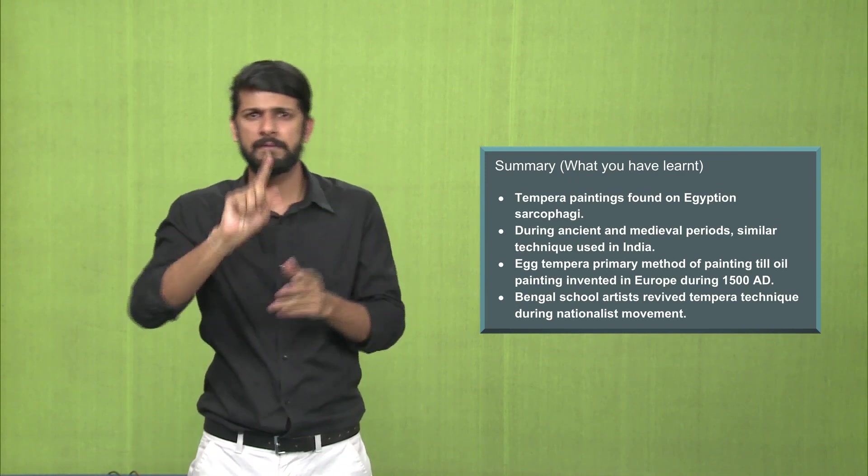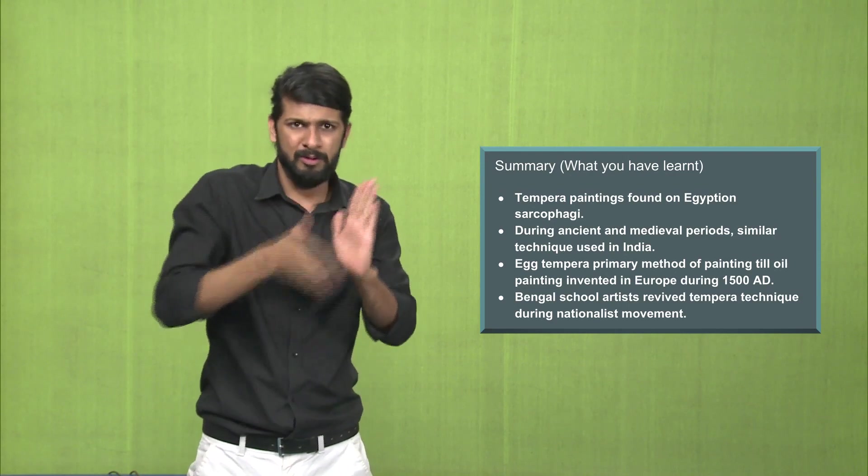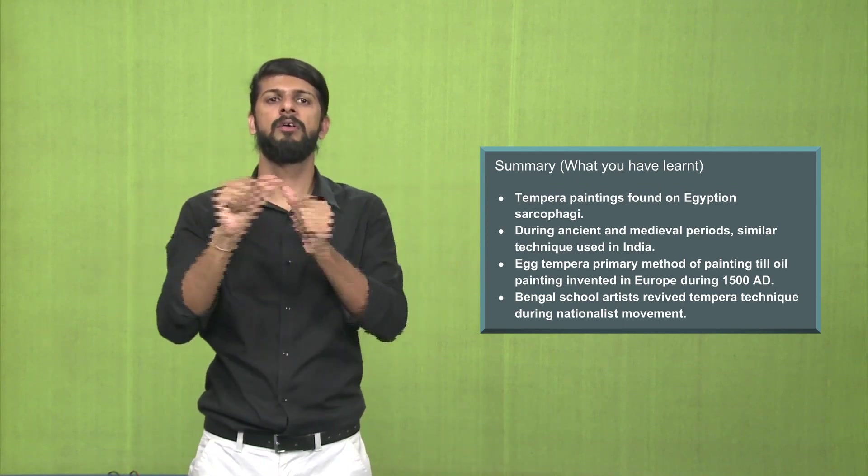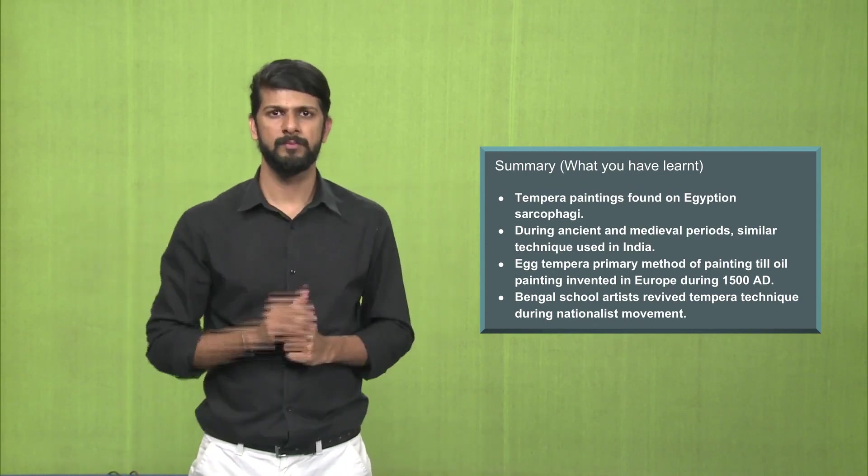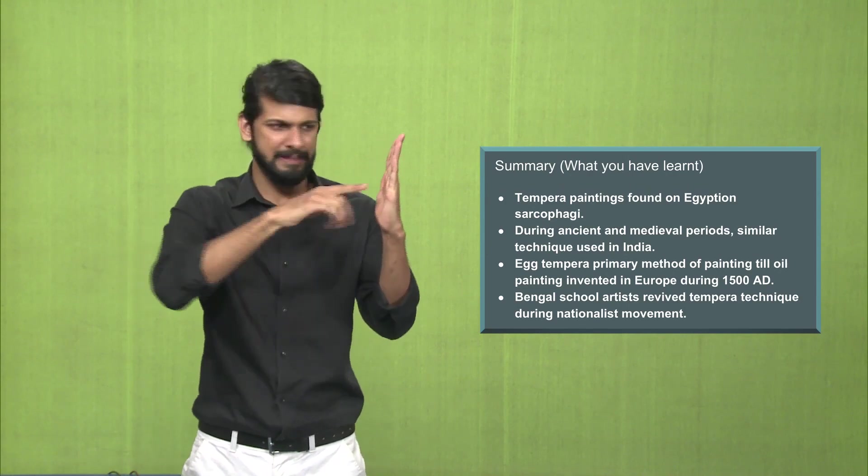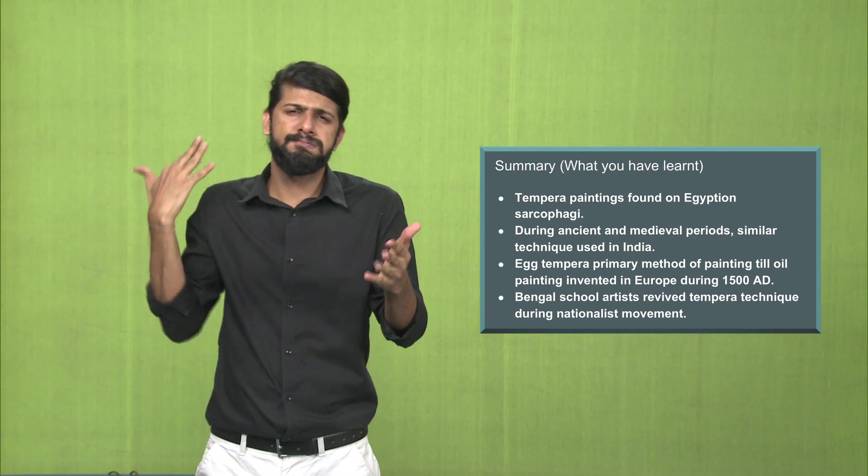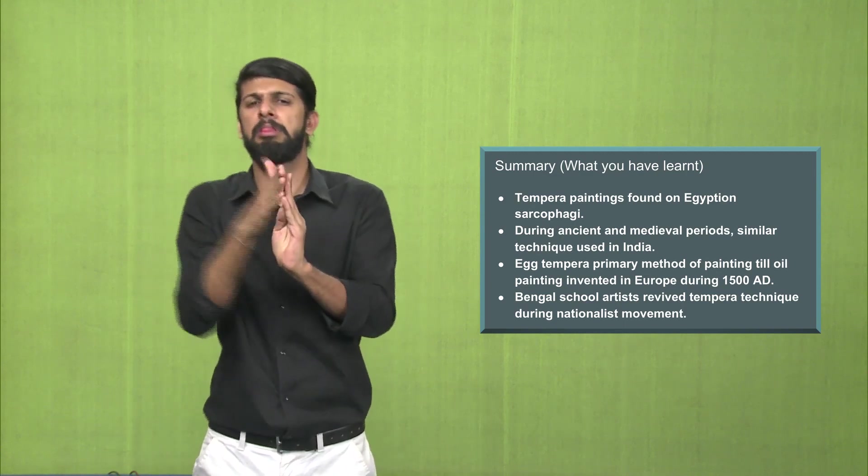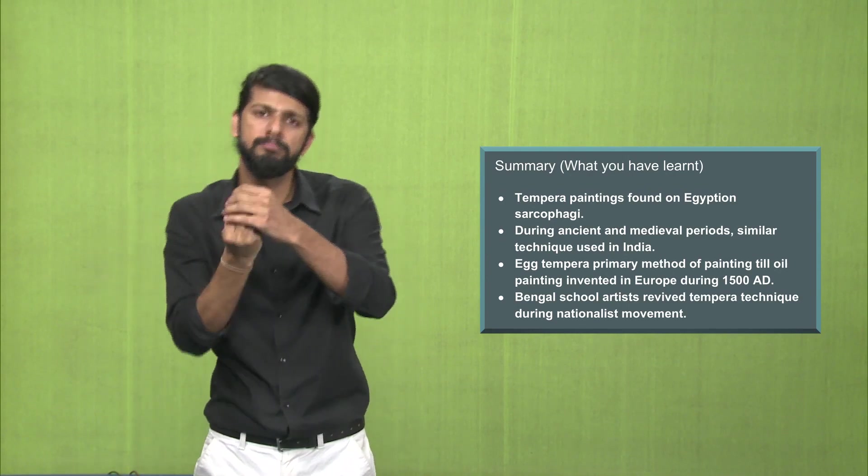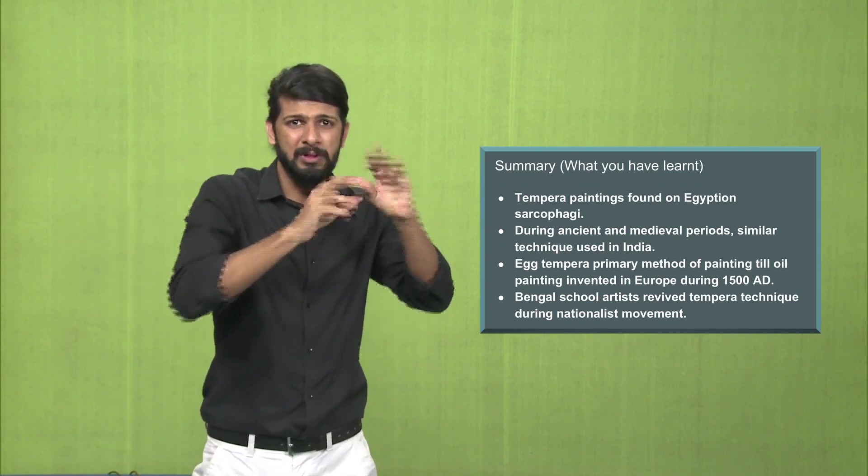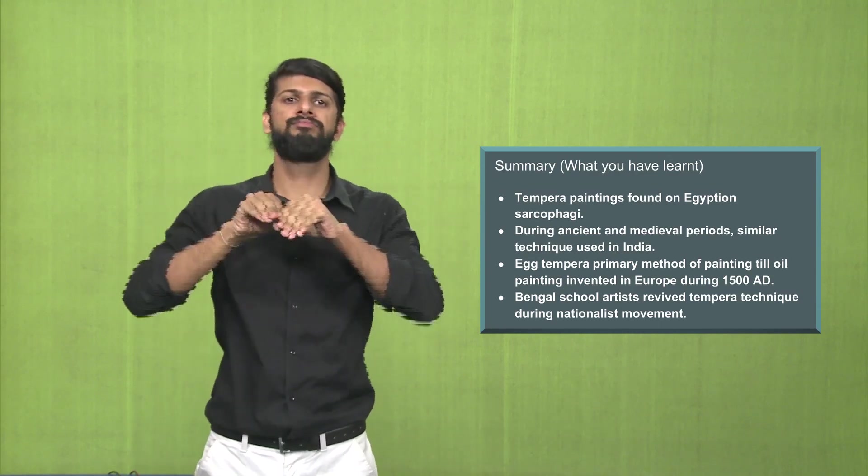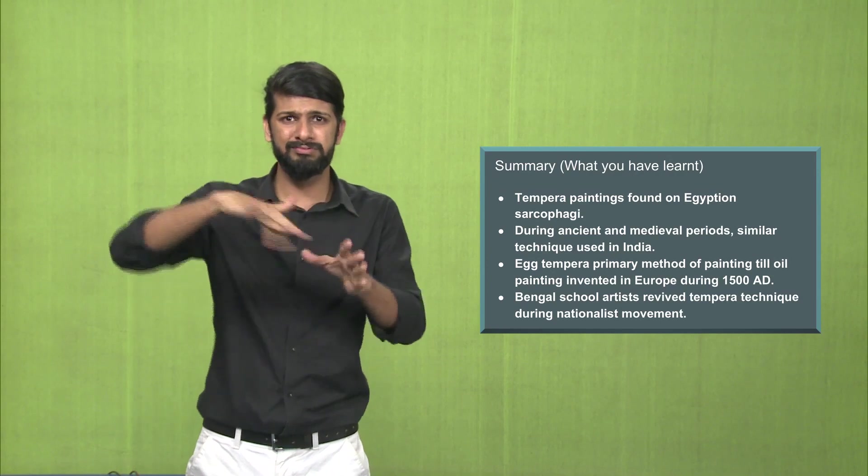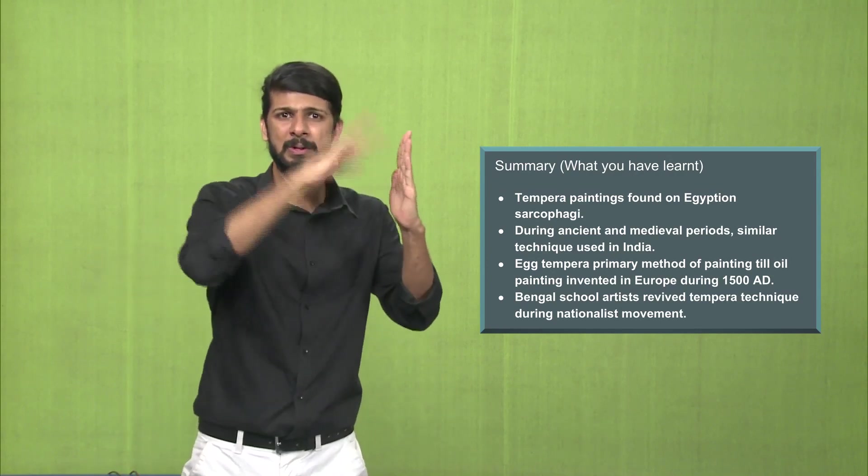The egg tempera was the primary method until oil painting was invented during the 1500 AD. Oil painting was invented and the tempera technique started declining while the oil painting technique was totally popularized. The Bengal school artists tried to revive the tempera technique.